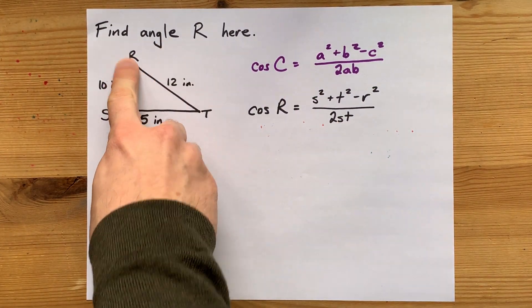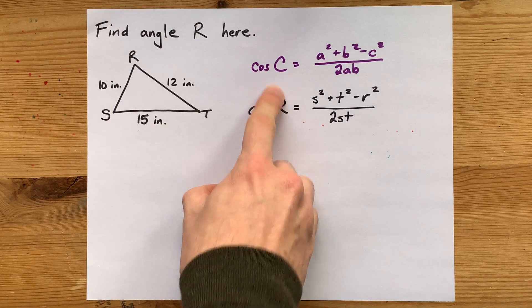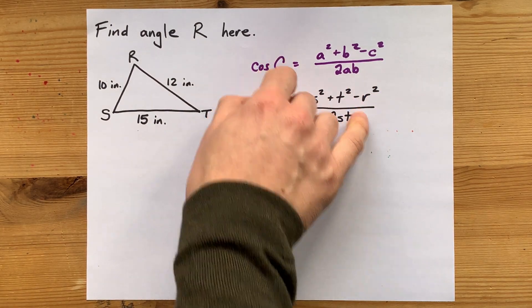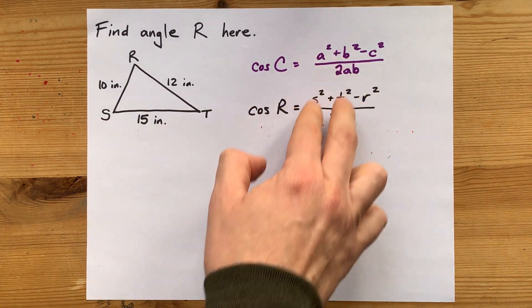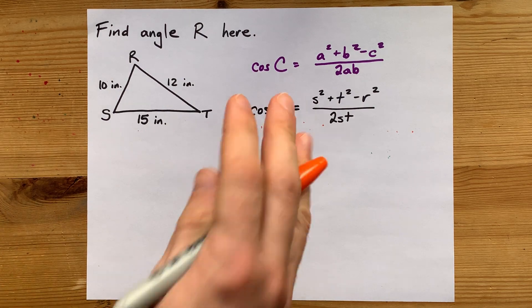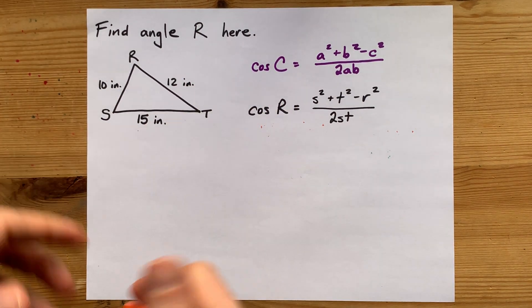If I'm asked for angle R, then I have to replace my C with R, replace that C with R, and put my other two letters where the A and B go, just like we did before, but now it's different letters. You're just going to have to get used to the fact that you can use different letters here.